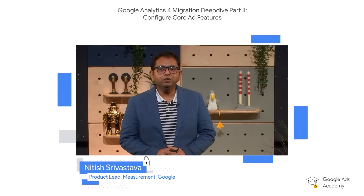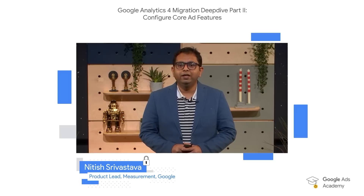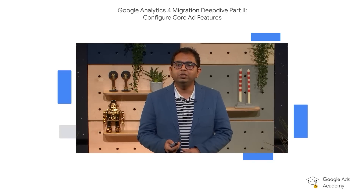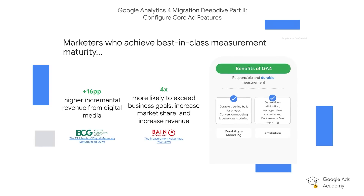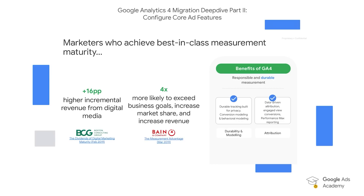Hello everyone. Welcome to the session on conversion migration. I am Nitish, a product lead here at Google. In this section, I will help you understand how you can complete conversion migration steps in the GA4 migration journey. We know that businesses which continue to improve their digital measurement tend to perform better over time. BCG found that there is an incremental 16 percentage point of return for businesses who invest in measurement maturity, and Bain & Company found that businesses who do so are four times more likely to achieve their goals.